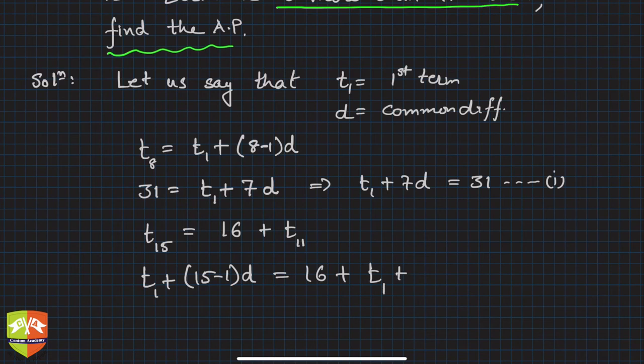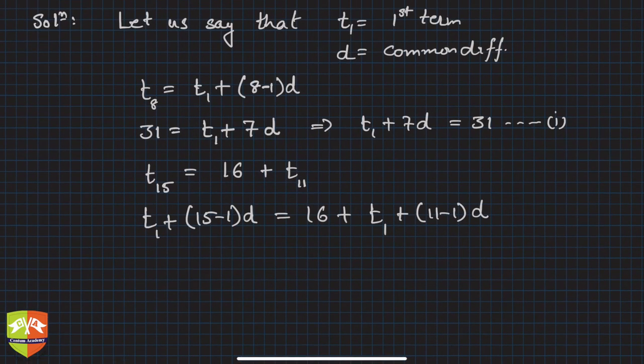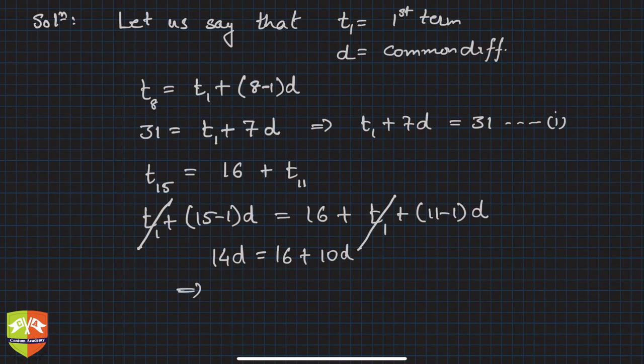So 14d is equal to 16 + 10d. This implies 14 minus 10, if you rearrange, you will get 4d = 16, so d = 4.